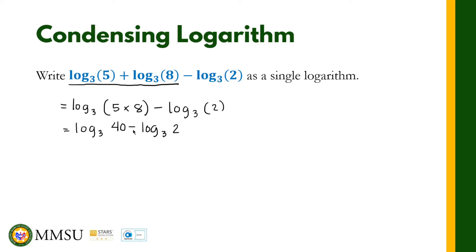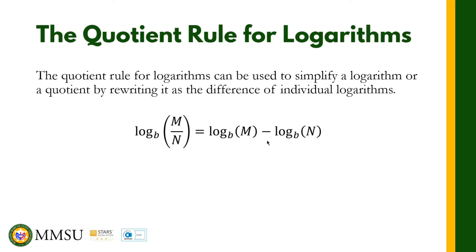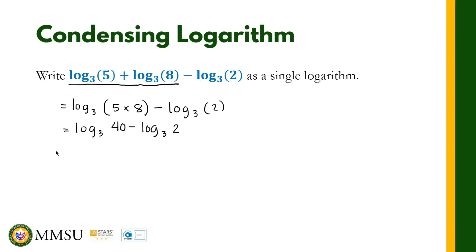Since we have a minus sign here, we are going to employ the quotient rule. The quotient rule states that the logarithm of m in base b minus the logarithm of n in base b gives us the quotient of m and n, with m as the numerator and n as the denominator. So this becomes the logarithm in base 3 of 40 divided by 2, which equals the logarithm in base 3 of 20. That is our answer for this problem.